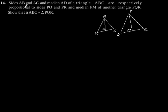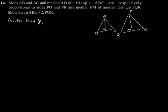Exercise 6.3, Question number 14. Sides AB and AC and median AD of a triangle ABC are respectively proportional to sides PQ and PR and median PM of another triangle PQR. We need to show that triangle ABC is similar to triangle PQR. According to the figure, it is given that AB by PQ is equal to AC by PR is equal to AD by PM.